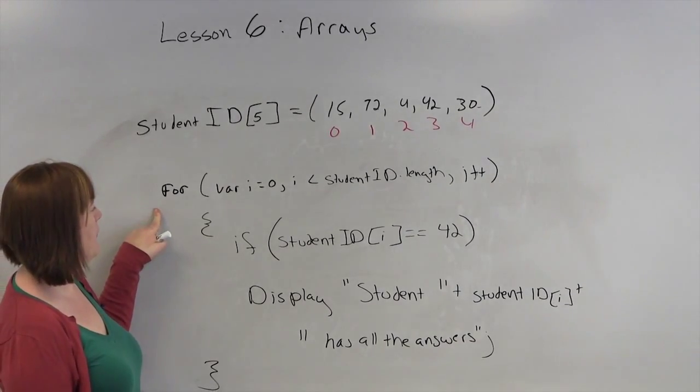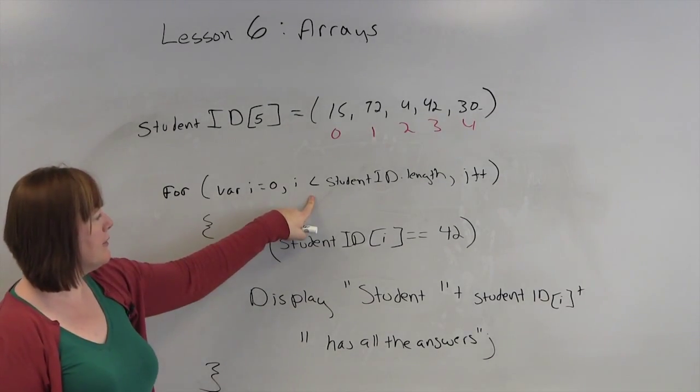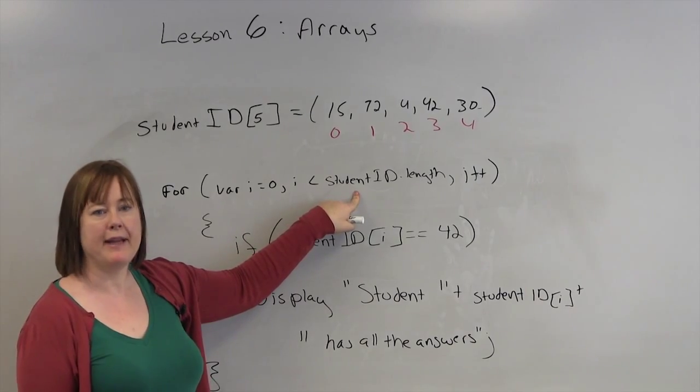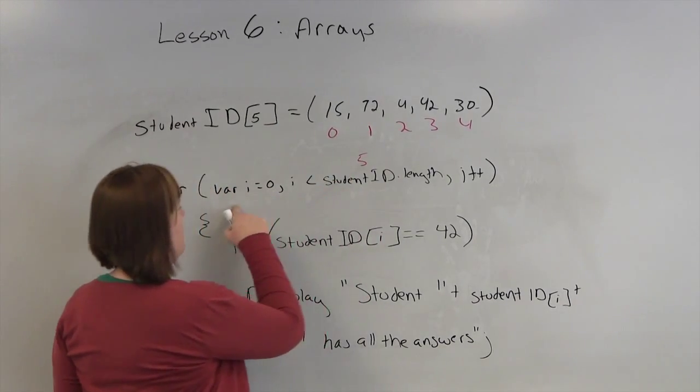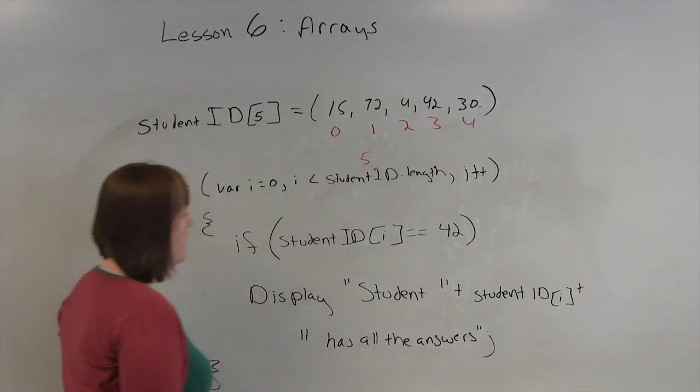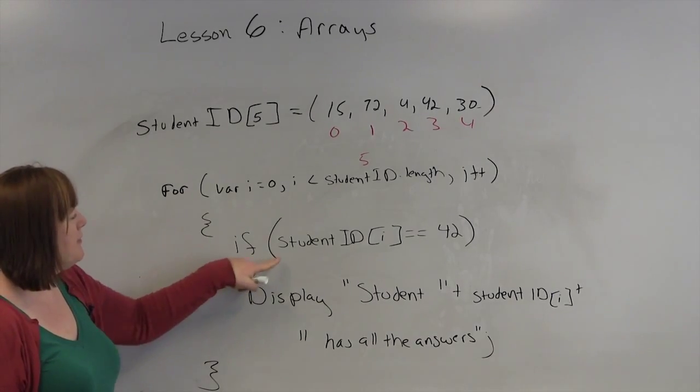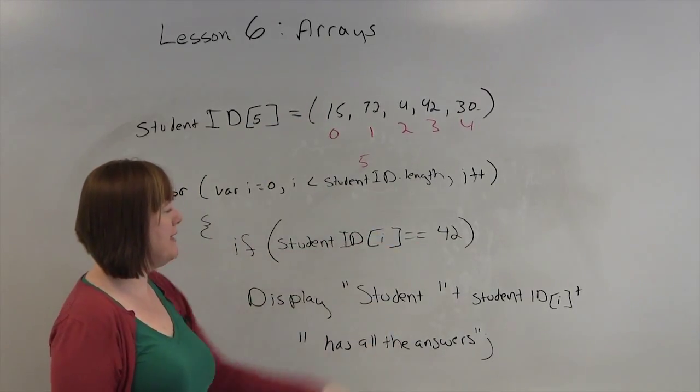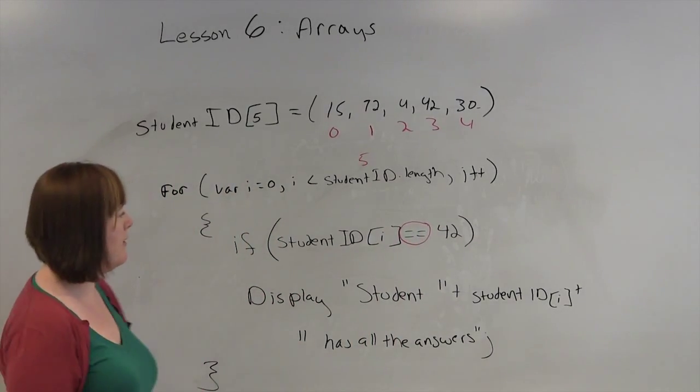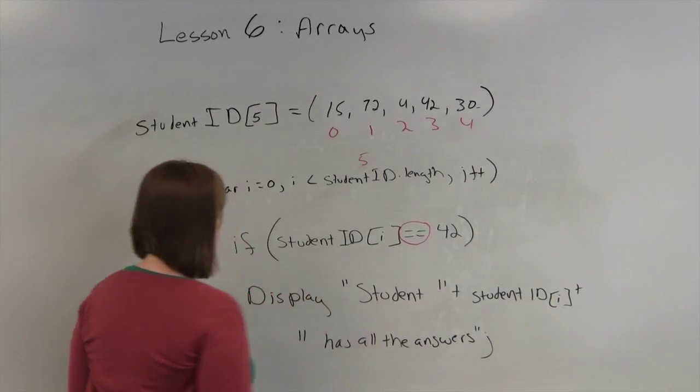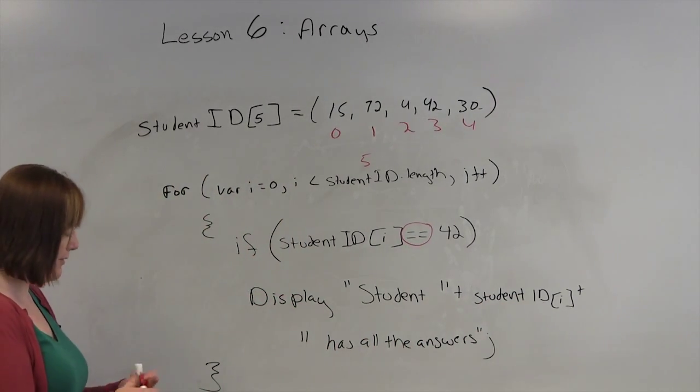Then I'm using a for loop. For, I'm declaring a variable named i. I'm initializing it to 0. And notice here, I don't have to put in a number. I can have it calculated. Studentid.length, which is 5. So this value is 5. As long as variable i is less than 5, i++. So then we will step through our code. And we're going to do an if statement. If studentid i, whatever's at this spot, equals equals. Equals equals is a comparison. A single equals is an assignment. Two equal signs compare. So if the studentid equals equals 42 display, student space plus studentid i has all the answers. So let's walk through it as if we were running the program.